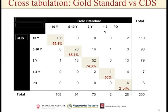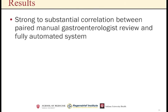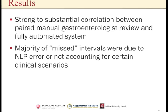The cross-tabulation showed excellent accuracy across the most common measures of a 10-year follow-up and a five to 10-year follow-up. However, there was decreased accuracy as the rarity of the event went down, in the one to three year and the physician decision arms. The results showed a strong, substantial correlation between paired manual gastroenterologist review and a fully automated system. The majority of missed intervals were due to NLP error or not accounting for certain clinical scenarios, such as a mass lesion that did not show cancer.